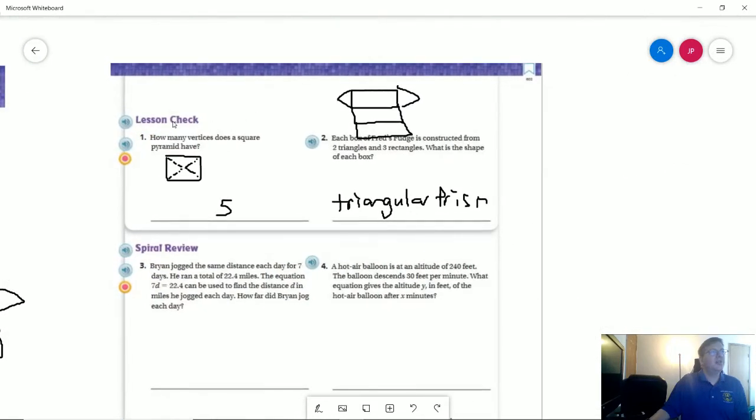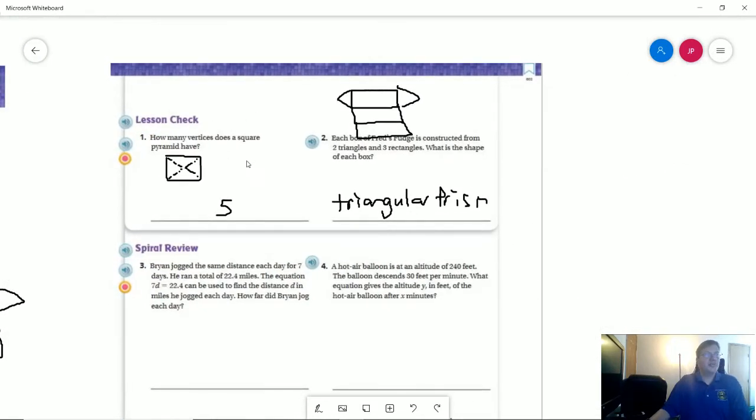To finish that, number one, how many vertices does a square pyramid have? It would be five. So I've tried to draw the 3D model for this. And so this would be one of our points, and then here, and then here, and then here.